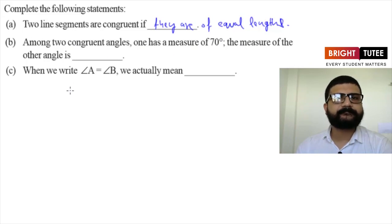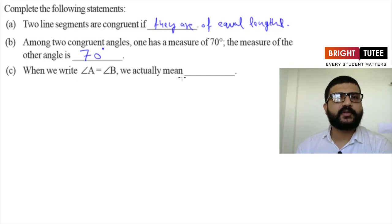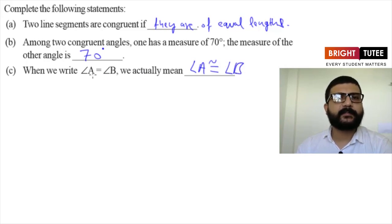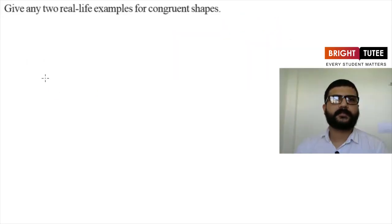We know that if two angles are congruent then their measures are equal, so the second angle will also be 70 degrees. The third part is: when we write angle A is equal to angle B, what do we actually mean? We mean that angle A is congruent to angle B, because if the measures of two angles are equal then the two angles are congruent.